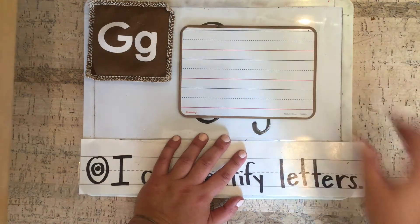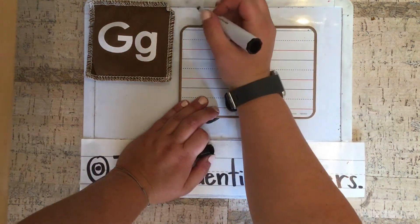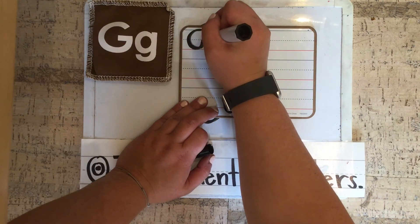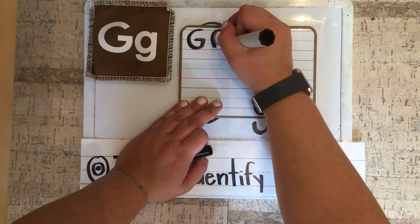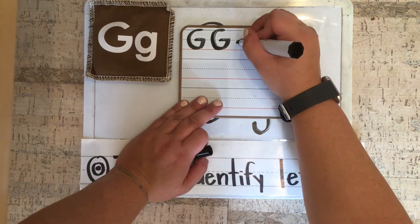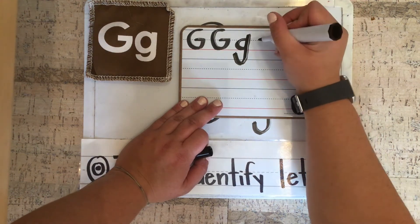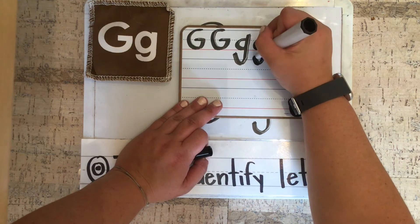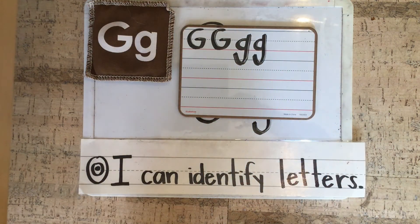Now I want you to get your white boards and practice writing the letter G with me. Let's do that again: big C curve, slide left. Let's do lowercase G now: little C curve, push up, pull down, and give it a hook. Lowercase G again: little C curve, push up, pull down, and give it a hook. This is the letter G. G, G, G.